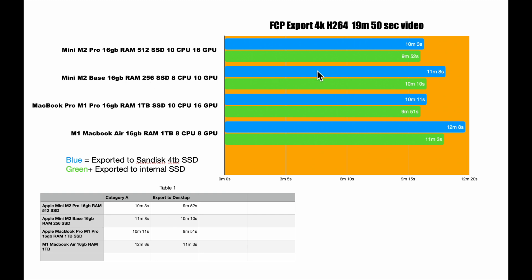Here we can see the difference — about almost a minute difference between the Pro and the base. But we have very close export times when downloading to the internal drive versus the external drive. The Pro gives a little bump with the better and faster SSD, plus more CPU and GPU cores.